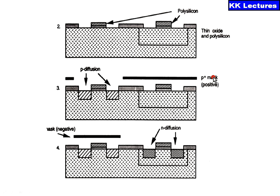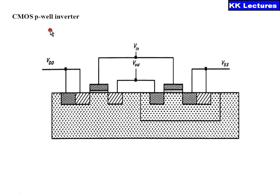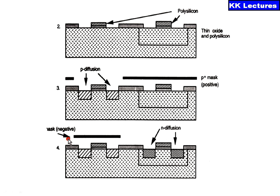Now covering the P-Well process — the P-Well with the P-MOS is covered and we are diffusing P-type material into the areas where we want to form the P-plus regions. The N-type material is covered since it is more attractive and that may damage the device. On the other hand, I will be masking the P-type side with a negative mask and diffusing N-type material to form the N-MOS transistor. This is the structure of the CMOS P-Well inverter — the formation of the CMOS transistor.